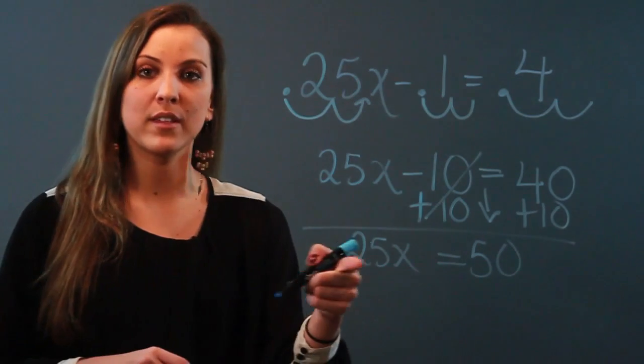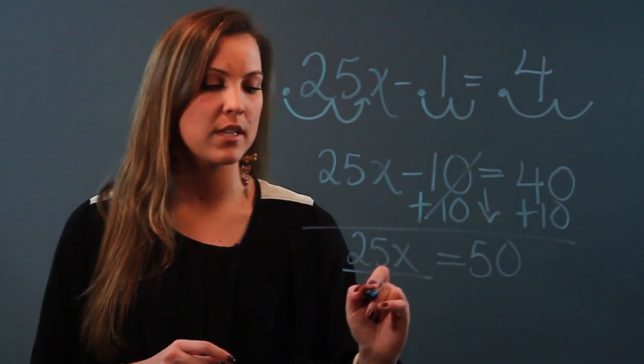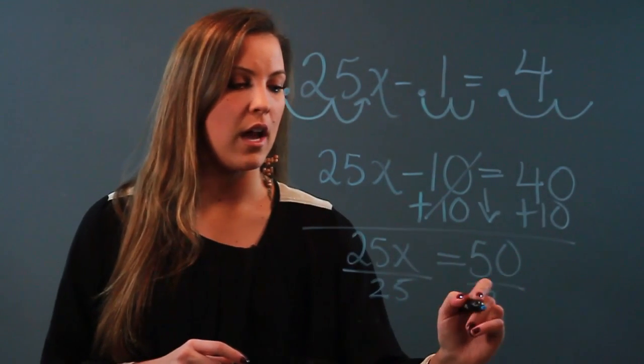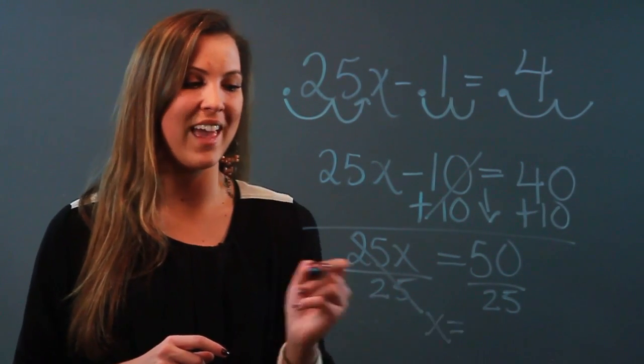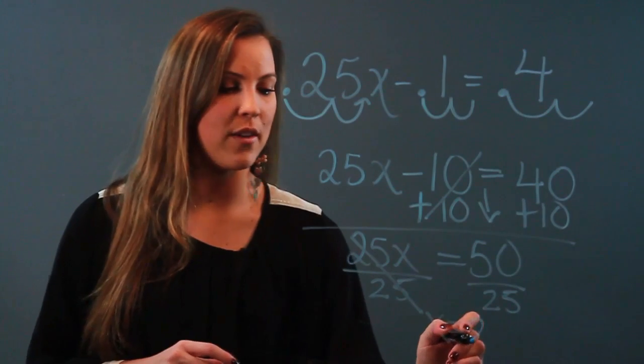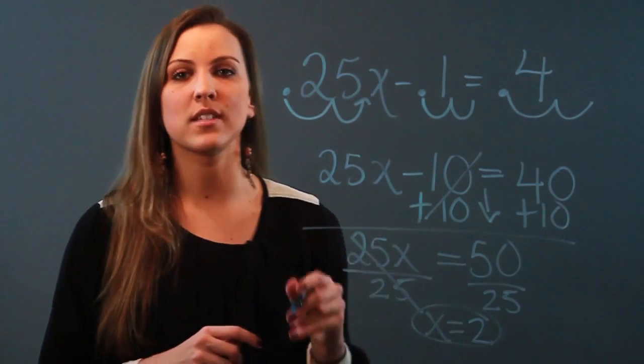How do I get rid of the 25? It's being multiplied now. So I use the inverse operation, which is division on both sides. 25 divided by 25 is 1, so that cancels out and I'm just left with x. 50 divided by 25 is 2, and my answer is x equals 2.